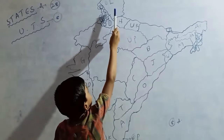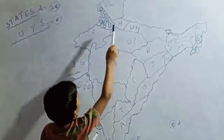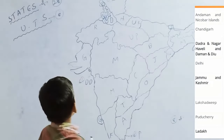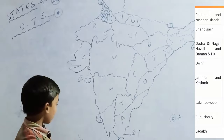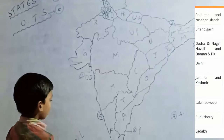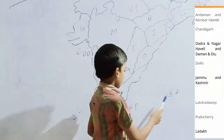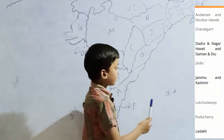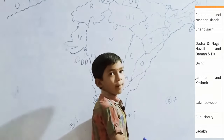First one, Ladakh. Second one, Jammu and Kashmir. Third one, National Capital of Delhi. Third one, Dadra and Nagar Haveli and Daman and Diu. Fourth one, Lakshadweep. And sixth one, Puducherry. And eighth one, Andaman and Nicobar Island.